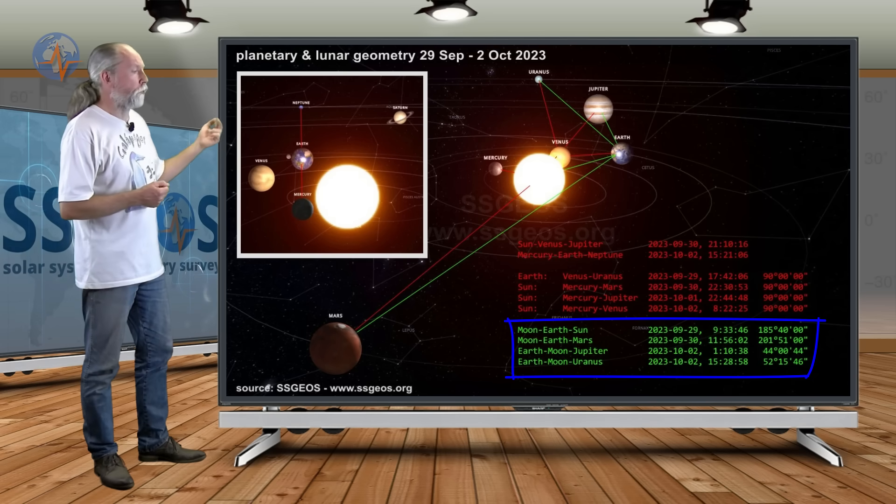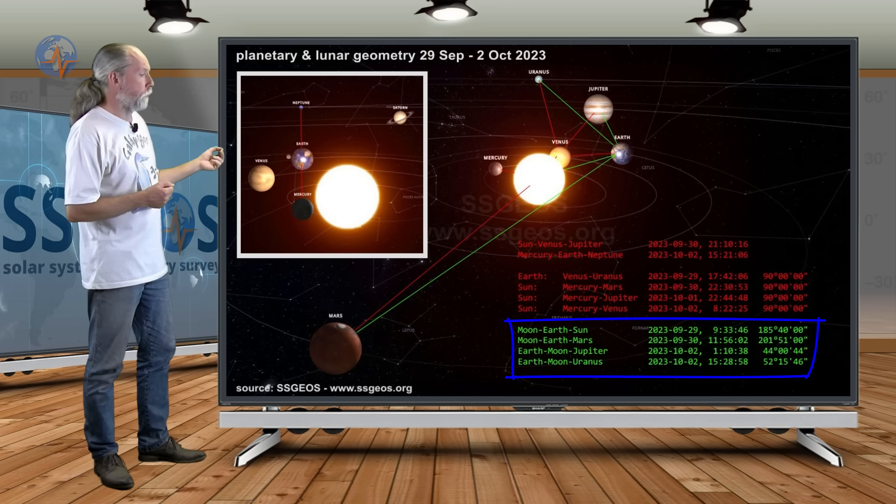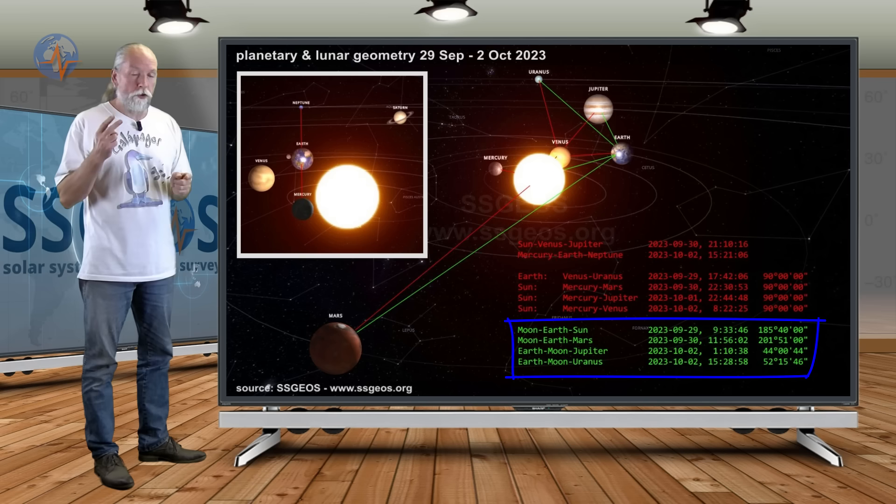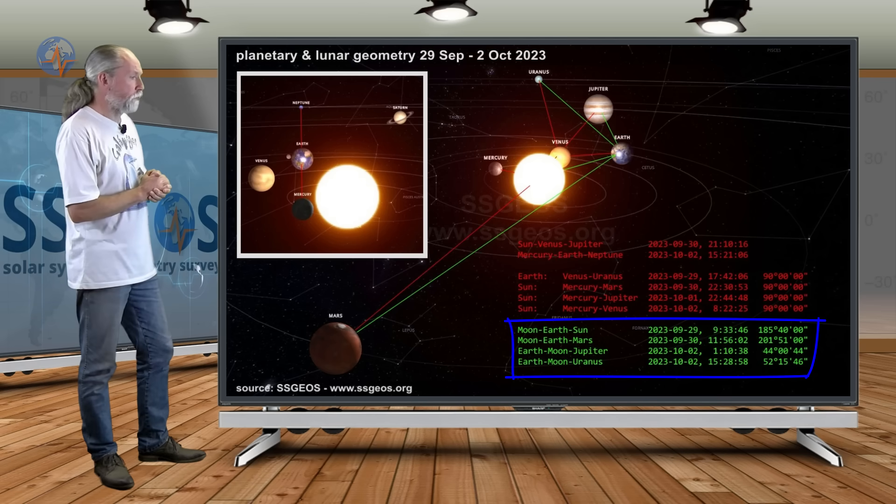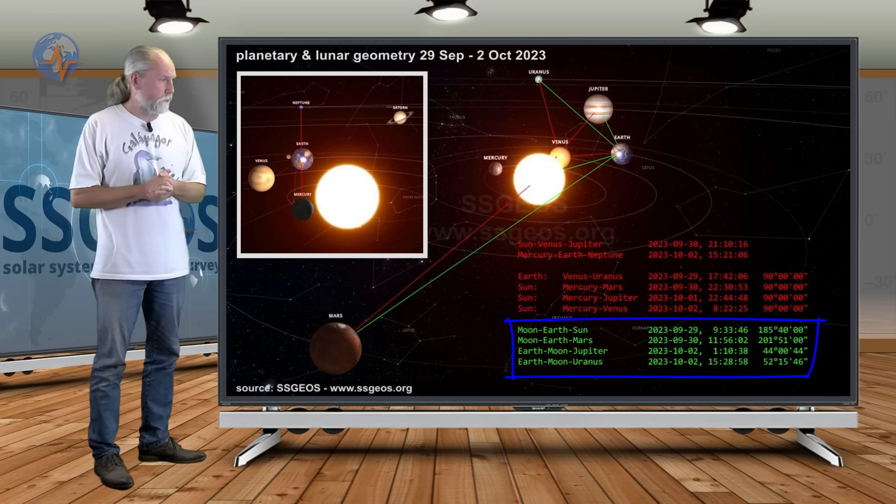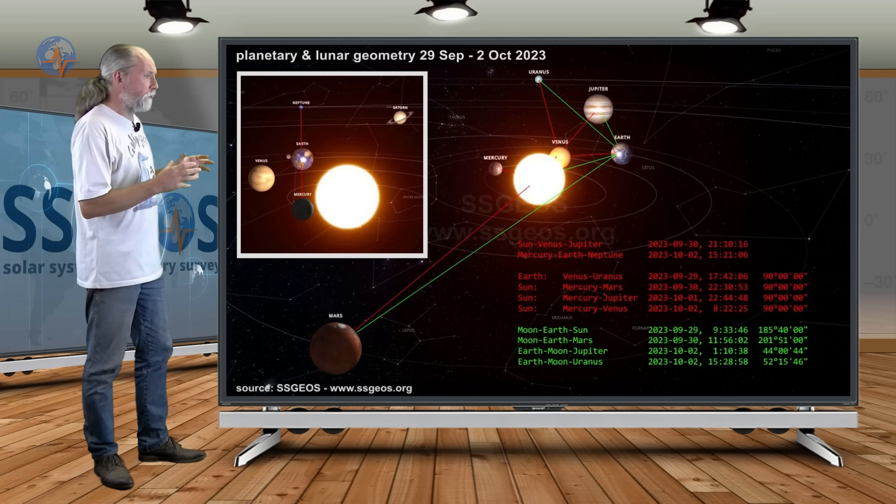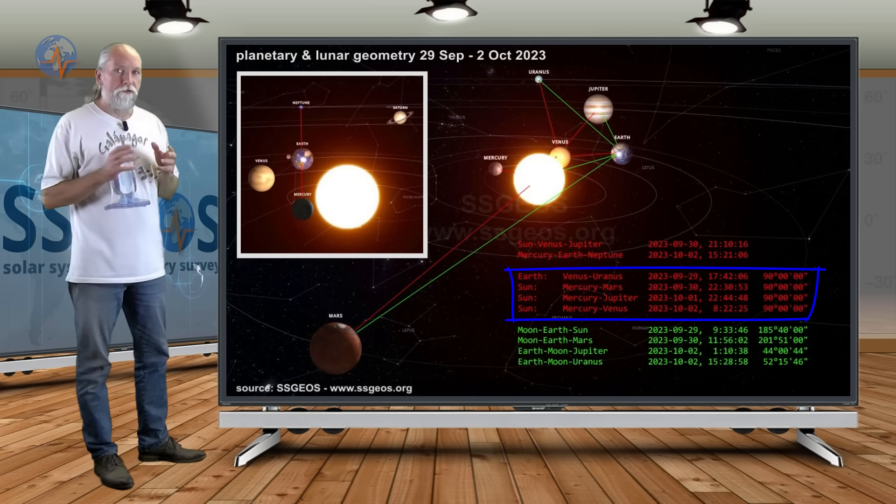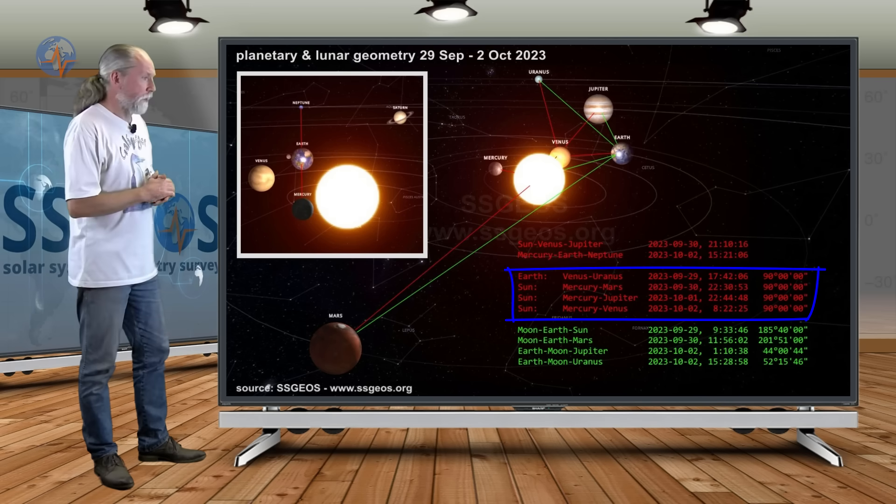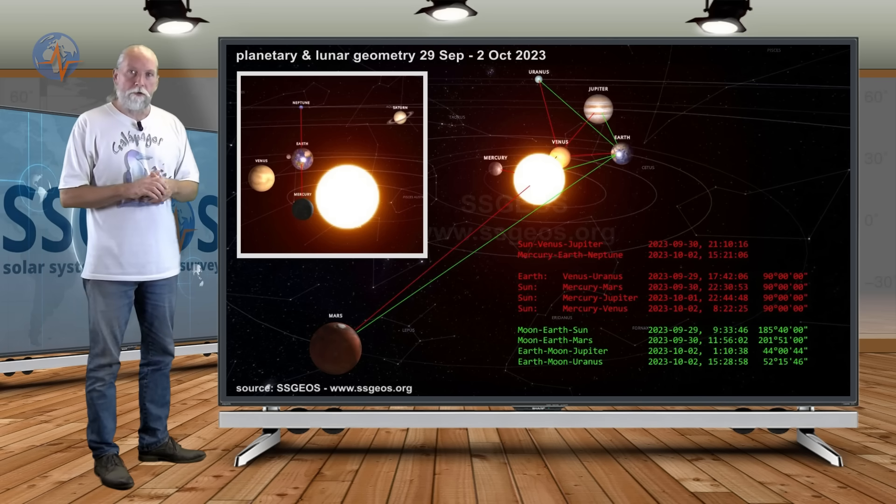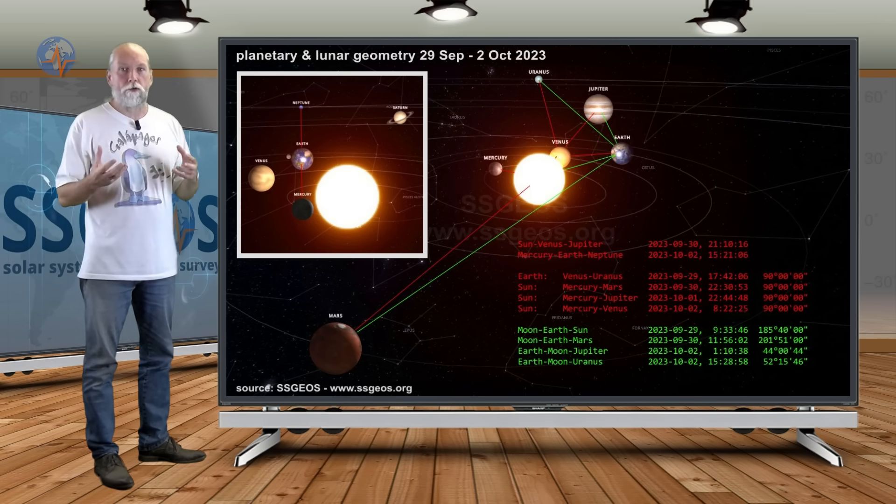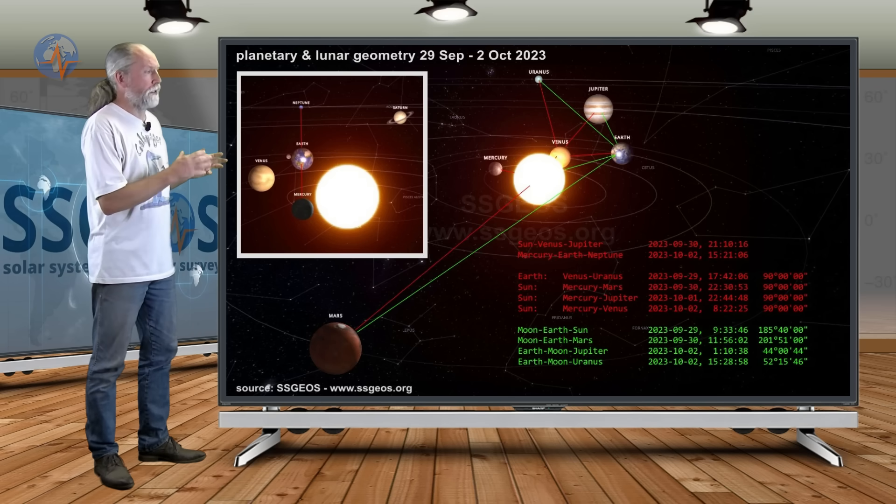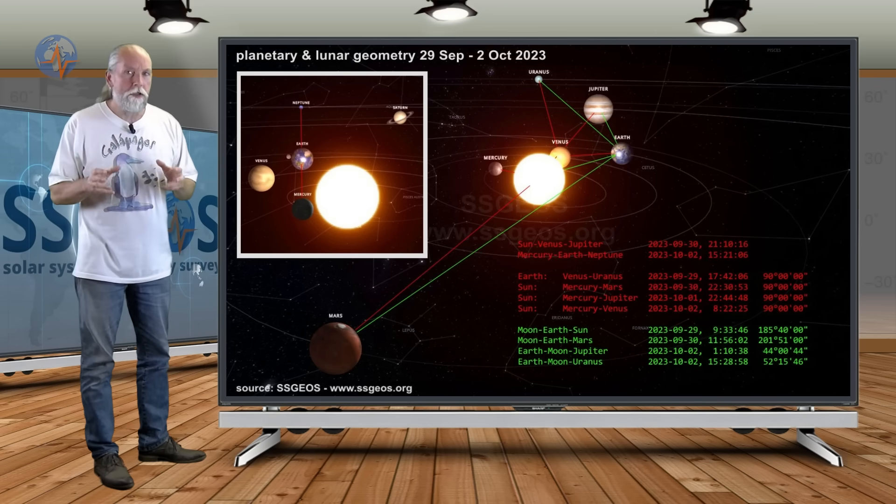Today, Moon-Earth-Sun, that's the full moon. Tomorrow, Moon-Earth-Mars. Then on the 2nd of October, two lunar conjunctions, that is the Moon with Jupiter and the Moon with Uranus. And all that time from the 29th, from today to the 2nd of October, we have these four right angle planetary right angles that adds to the critical geometry. We may have a combination of electrical charge coming from this planetary and lunar geometry. And again, around the 2nd of October, 1st, 2nd, and 3rd, they will probably be most critical.